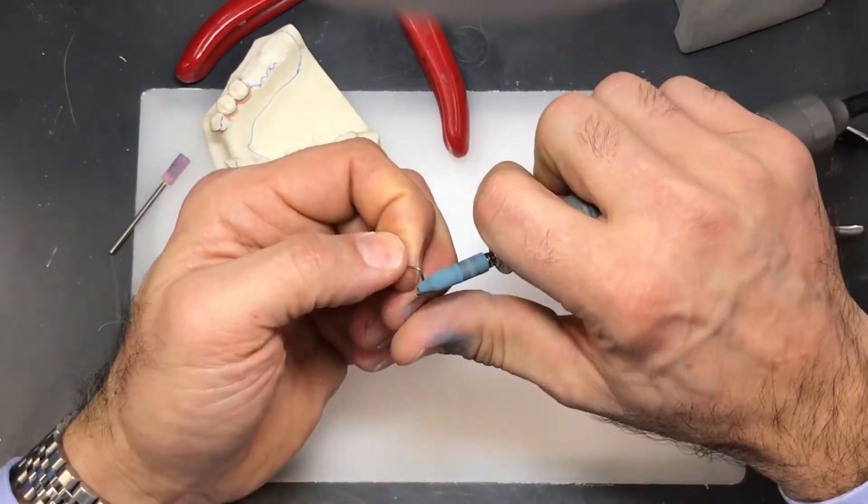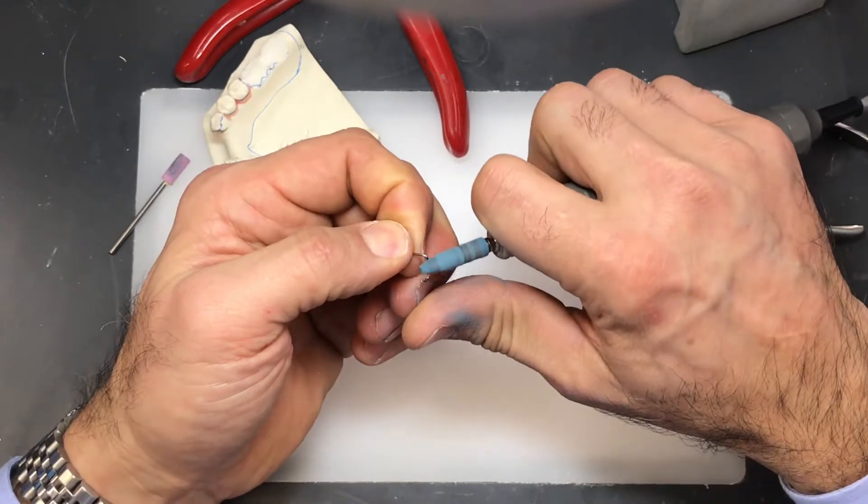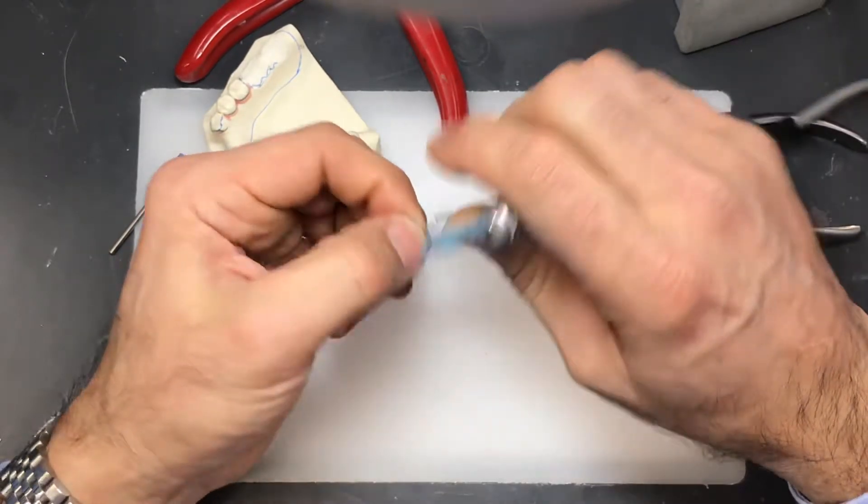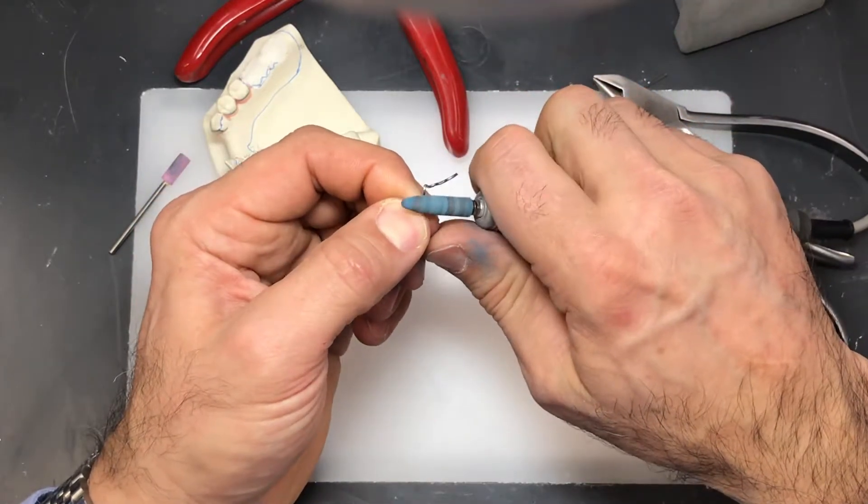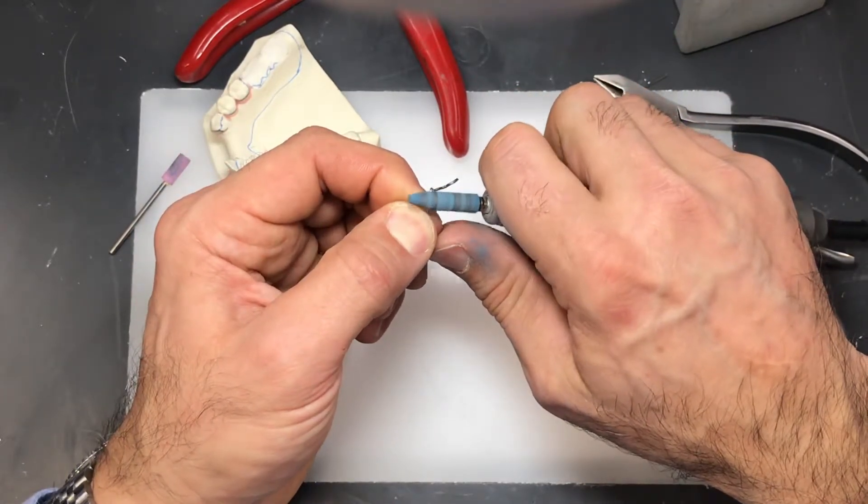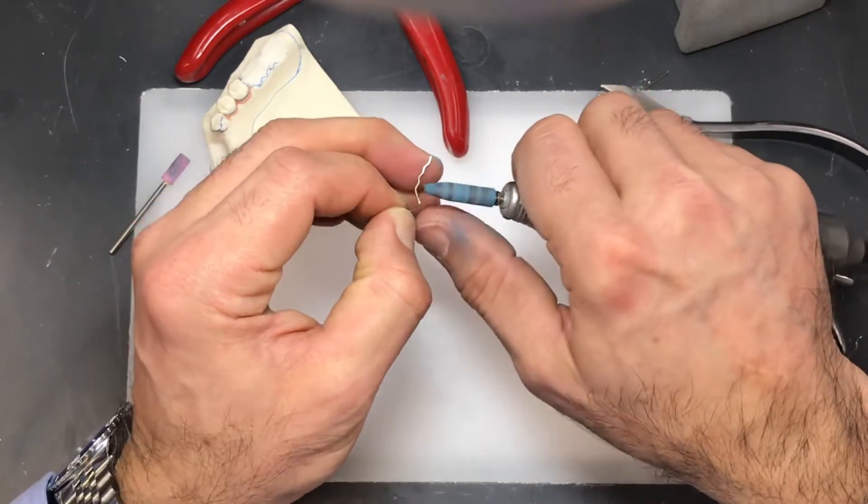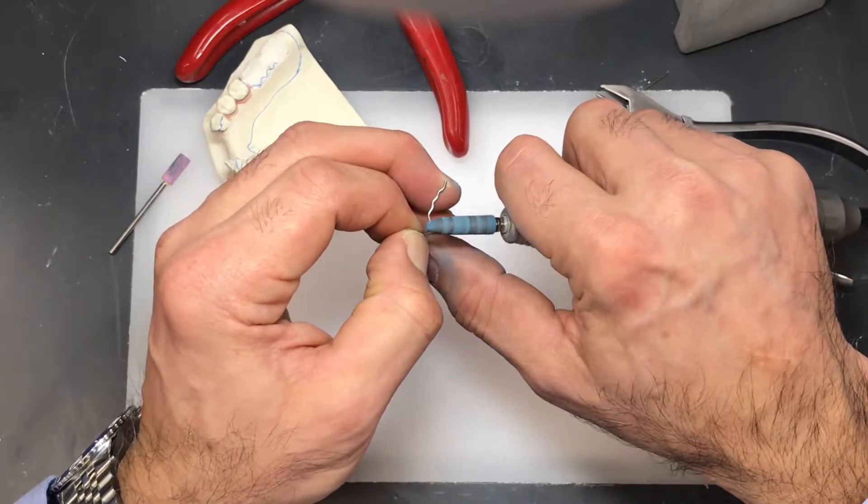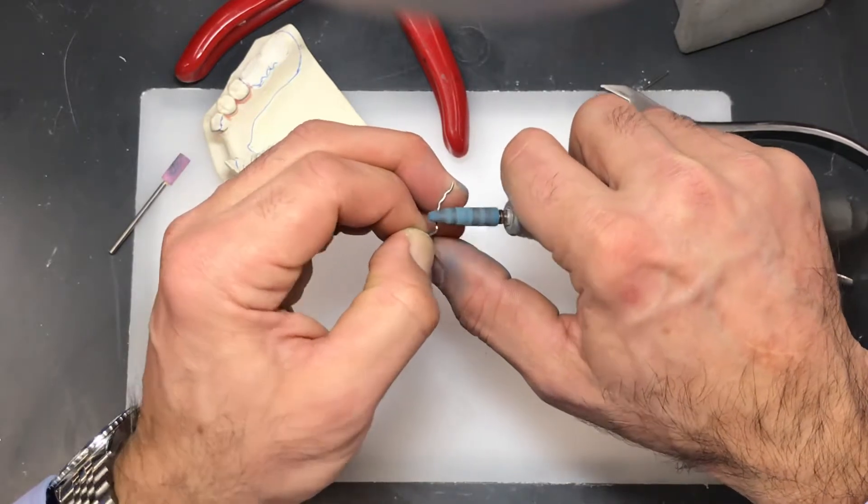I've created some nicks here on the wire so I'm going to take the opportunity now to round those off, to smooth those out. You don't need to do this portion because this is going to be embedded inside the acrylic.